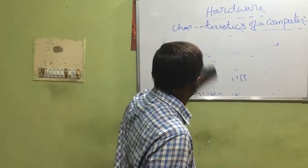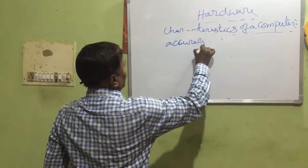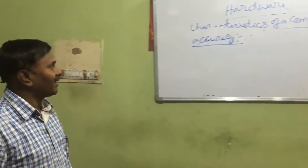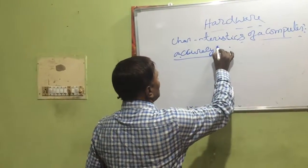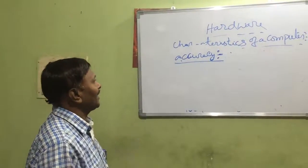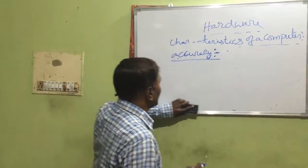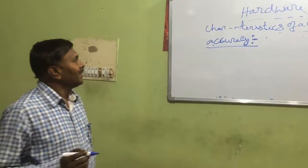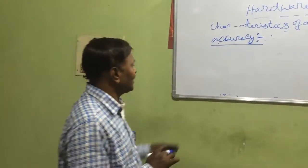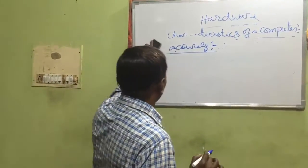Next, we see accuracy. Accuracy means exactly — the computer can do calculations accurately. Once the data is given correctly, the computer will automatically give the correct, accurate result. It means depends upon the operator: if you give the data correctly, it gives accurate values. The computer never makes mistakes, provided that you give the data correctly. That is about accuracy.